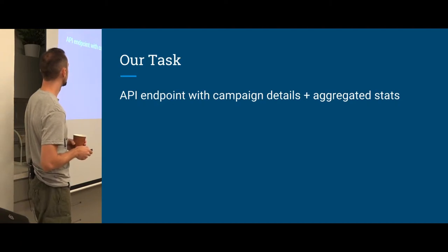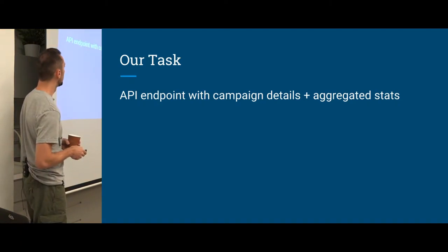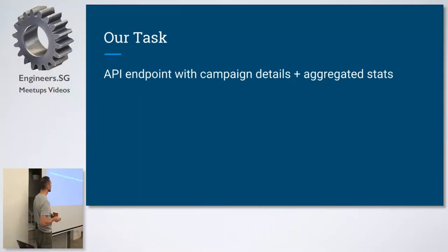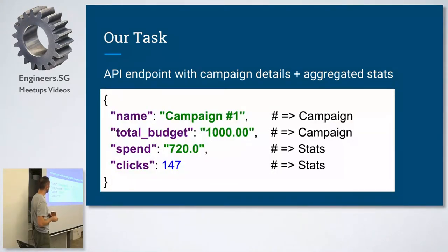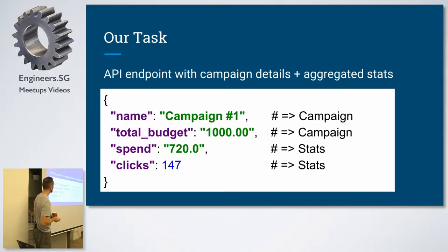Our task is very simple. We want to build an API endpoint which returns campaign details plus aggregated stats. So for every hour the campaign was active, I want to collect how many clicks, how many conversions, how many bid requests, how much was spent, etc. The example output includes the name, total budget, how much was spent, and how many clicks. The first two come straight from the campaign, and the last two come from the stats.